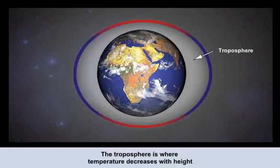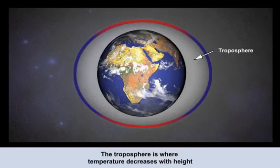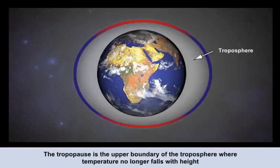The first of these segments, or layers, is called the troposphere. This layer is closest to the Earth, and its defining characteristic is the marked decrease in temperature with height throughout the layer. Where the temperature no longer decreases with height defines the upper part of the troposphere. This upper boundary we call the tropopause.